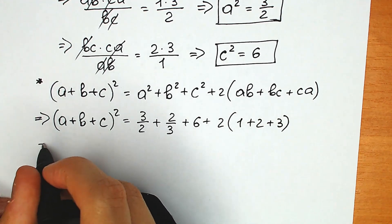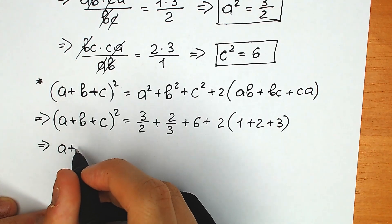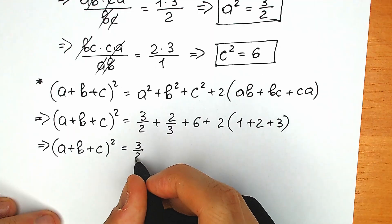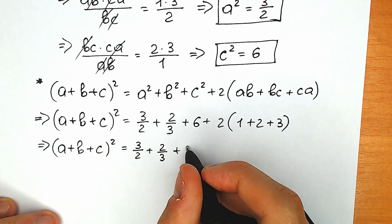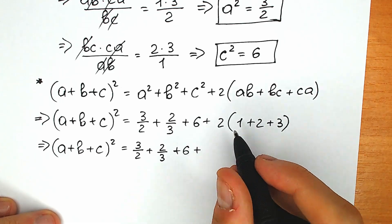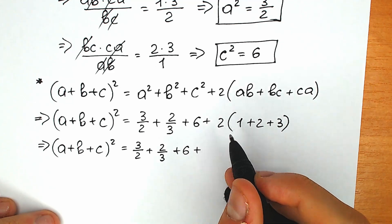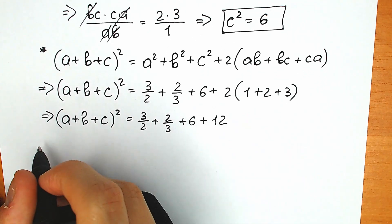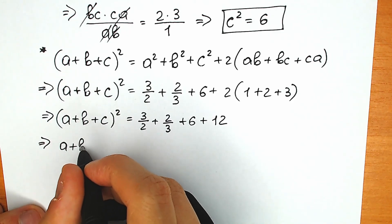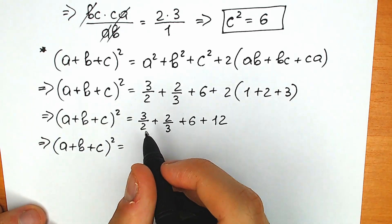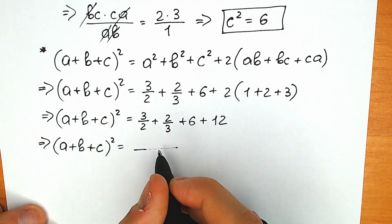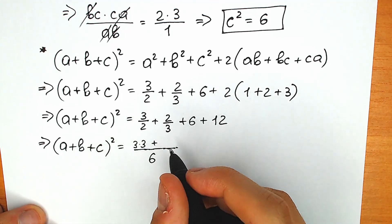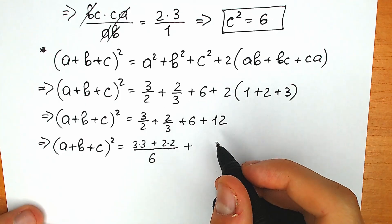Let's simplify. We have (a plus b plus c) squared equals 3/2 plus 2/3 plus 6, plus 2 times (1 plus 2 plus 3). The sum 1 plus 2 plus 3 equals 6, and 6 times 2 equals 12. Now let's add the fractions using the common denominator 6: three times 3 plus two times 2 over 6, plus 6 plus 12 equals 18.